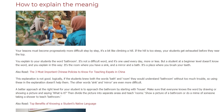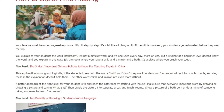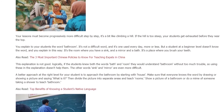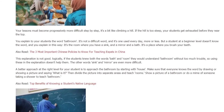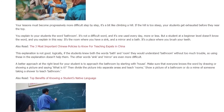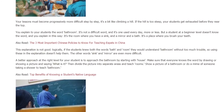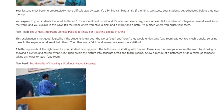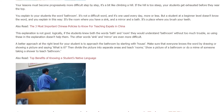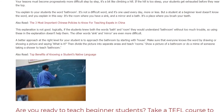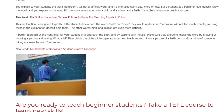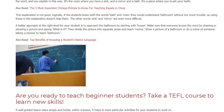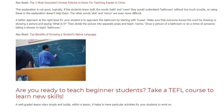Logically, if the students knew both the words 'bath' and 'room' they would understand 'bathroom' without too much trouble, so using these in the explanation doesn't help them. The other words — sink and mirror — are even more difficult. A better approach at the right level for your student is to start with the word 'house.' Make sure everyone knows the word by drawing or showing a picture and asking 'what is it?' Then divide the picture into separate areas and teach rooms. Show a picture of a bathroom or do a mime of someone taking a shower to teach 'bathroom.'